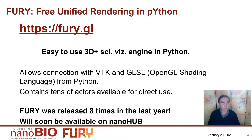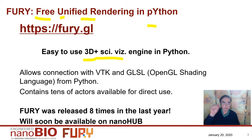FURY stands for Free Unified Rendering in Python. Here is a URL: FURY.GL. It supports 3D standard visualization surfaces and particles in Python, and it connects to the OpenGL and VTK standards — well-known standards in the field. There are lots of functions ready for you to use, and it's actively maintained on GitHub by the community, and was released eight times over the last year.